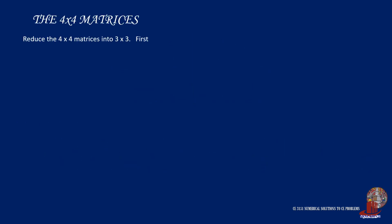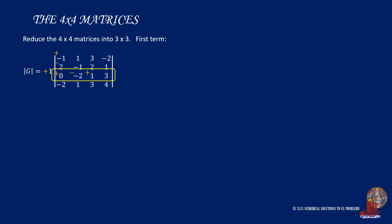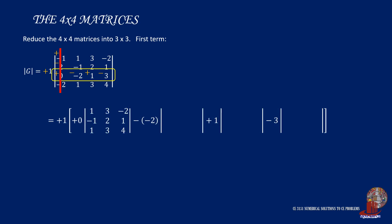Focusing on the first term, we again choose a column or row to use where having a 0-valued element can reduce the procedure. Let's use the third row. We then add the alternating signs, starting with plus on A11, minus on element A21, element A31 has plus, followed by minus on element 32, then another plus on element 33, and then minus on the following element. We can then identify the outline of the 3 by 3 matrices. Then again, cover the first column to complete the determinant of the first term of the 4 by 4 matrix.